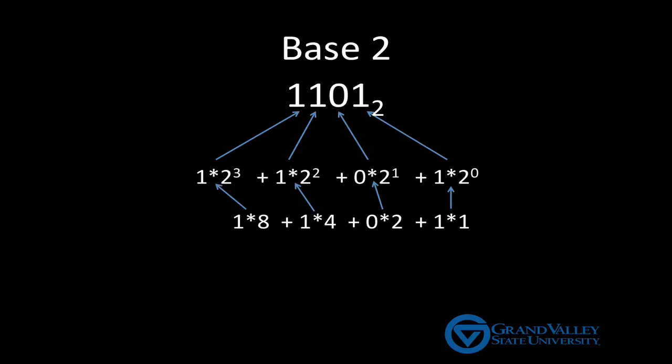Let's begin with 1, 1, 0, 1 base 2. Following the pattern of base 10, although this time right to left, we see that this means 1 times 2 to the 0 power plus 0 times 2 to the 1st power plus 1 times 2 squared plus 1 times 2 cubed. When we expand the powers of 2, this is the same as saying 1 times 1 plus 0 times 2 plus 1 times 4 plus 1 times 8. Add that all up, and we see that 1, 1, 0, 1 base 2 is equivalent to 13 in base 10.